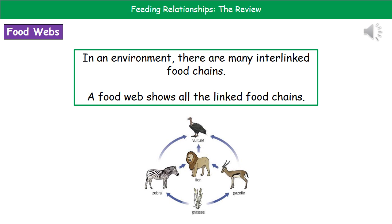Here's an example of one of these food webs. One food chain would be: grass, gazelle, lion, vulture. We could also have grass, gazelle, vulture. Or grass, zebra, vulture. Or grass, zebra, lion, vulture. So we've got all those different food chains linking together to make the food web.